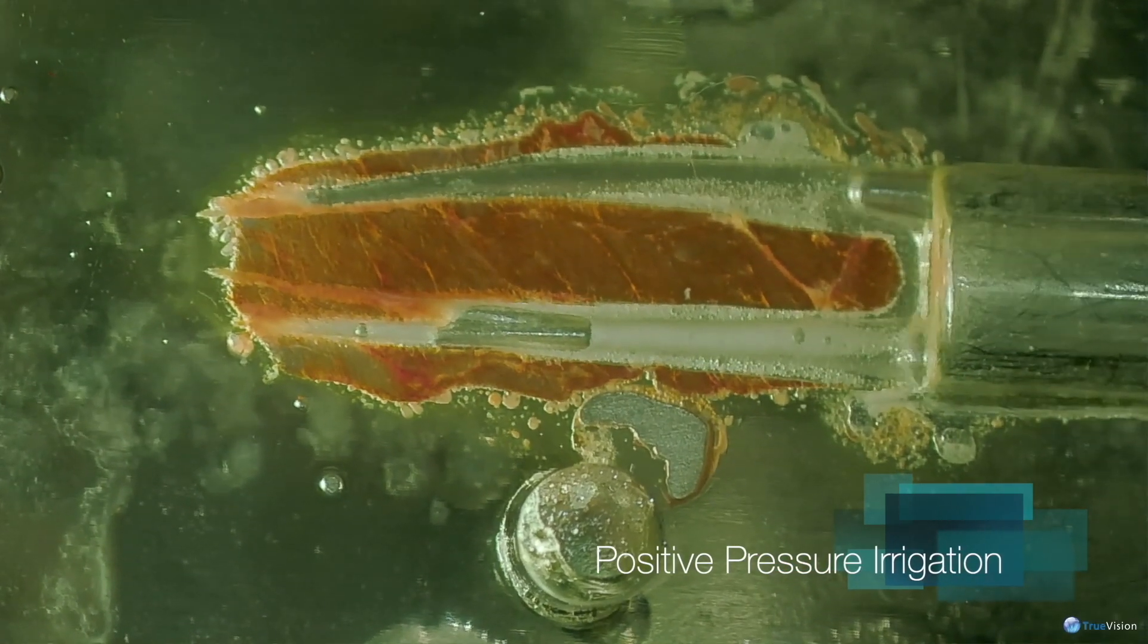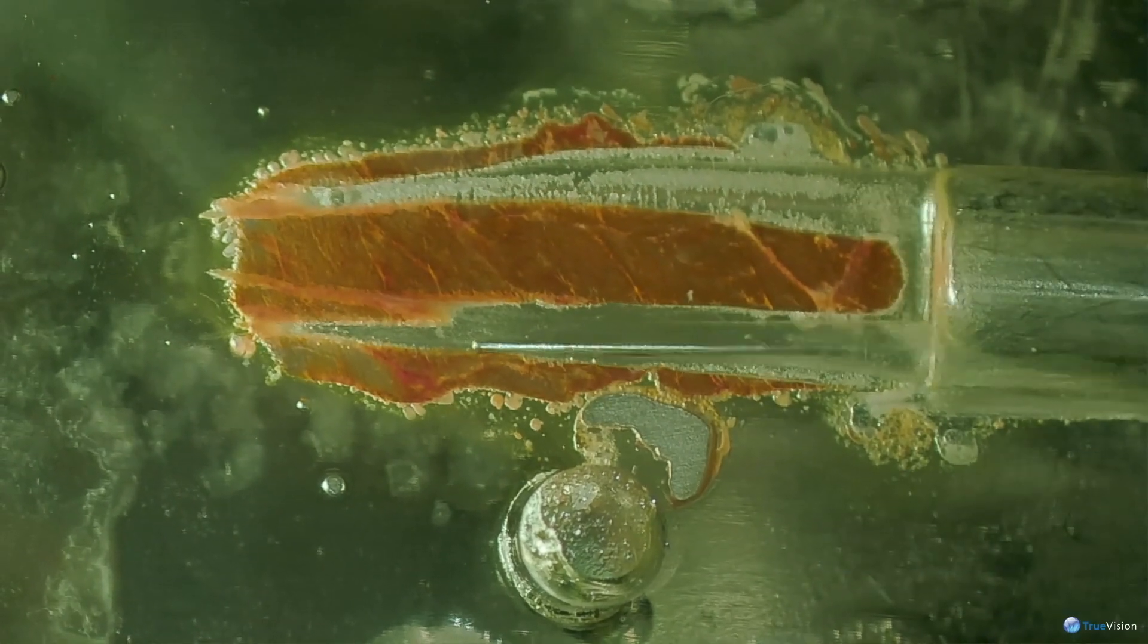Positive pressure irrigation is quite effective at flushing the debris out of the primary canals. It's not doing anything to the lateral recesses. We're now depending on the hypochlorite to do what it does best, chemically dissolve, digest.